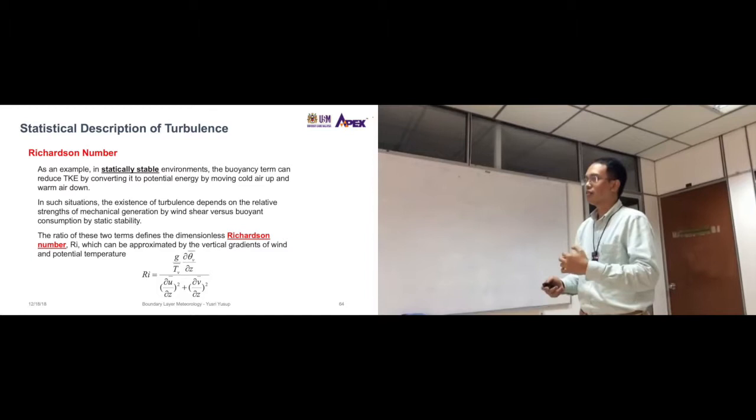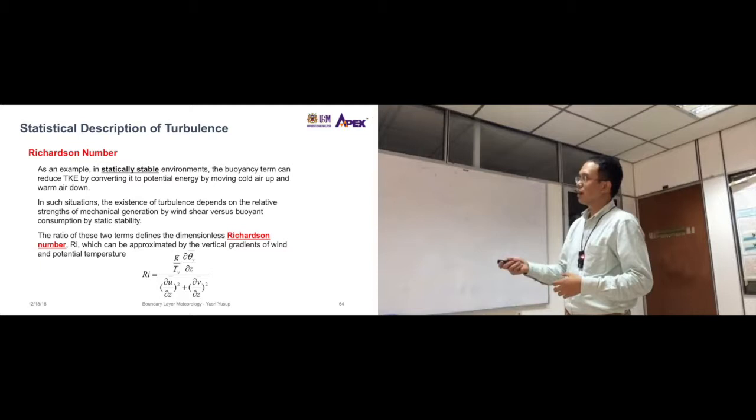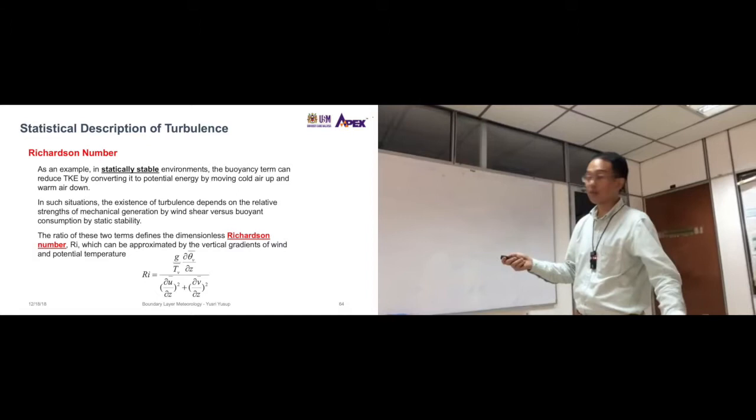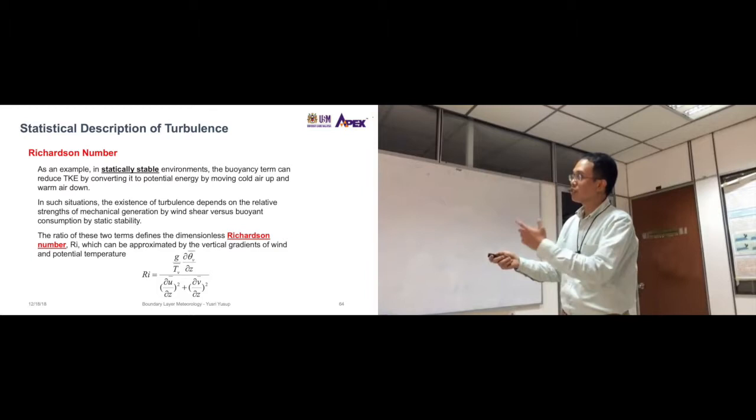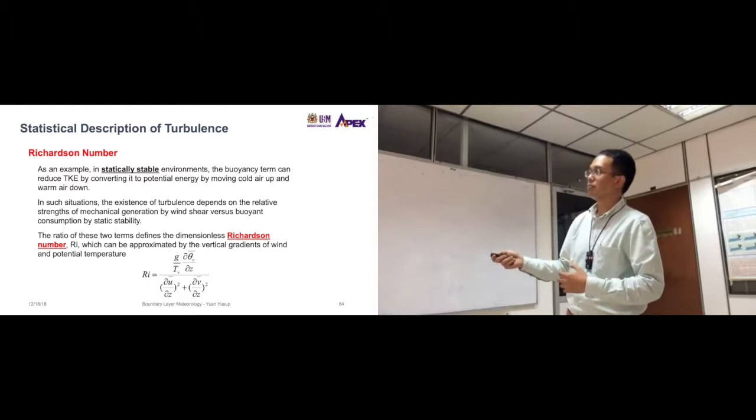Then the generation of turbulence, the turbulence is still there. But how is it generated? It is generated through the mechanical way. And this mechanical generation, this mechanical portion of turbulence is generated by wind shear, which we've already talked about before. And this wind shear is, for statically stable environments it is more important than the buoyancy term.